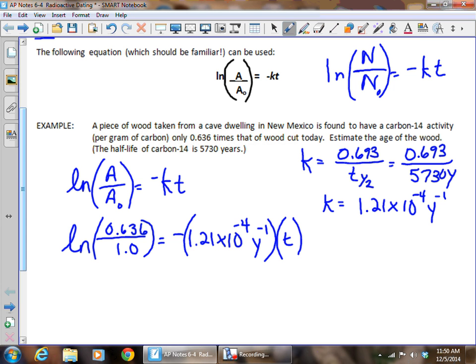And the time elapsed, then, is what we're trying to find. When we take the natural log, then, of this value, we get negative 0.4526 is equal to negative 1.21 times 10 to the negative fourth reciprocal years times time.